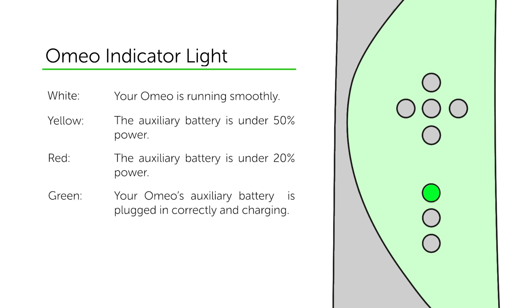A green light will show when your Omeo's auxiliary battery is plugged in correctly and charging. It will flash when your machine is fully charged.